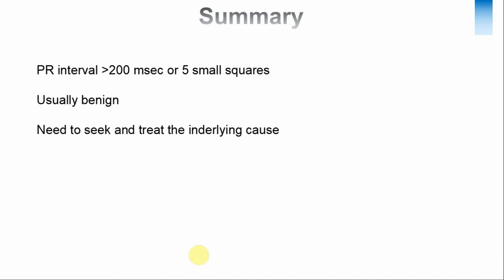Thank you. So, the first degree heart block is a condition where the PR interval is longer than 200 milliseconds. The problem may be in the AV node — that's why it is called first degree atrioventricular block — however, it can happen due to problems at other levels: the atrial level, bundle of His level, or even at the right or left bundle. The causes include young athletes, drugs, myocardial ischemia, myocarditis, sarcoidosis, myocardial fibrosis, and electrolyte disturbances. Usually it is a relatively benign condition, and our aim is to identify and treat the underlying cause. First degree heart block is easy to miss, so we need to analyze the ECG in a very systematic way.